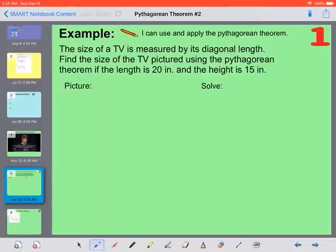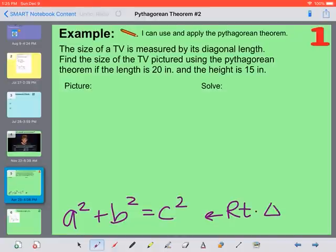So remember our Pythagorean Theorem is a squared plus b squared equals c squared for any right triangle. So here's our example.